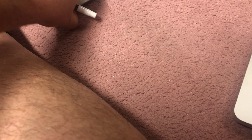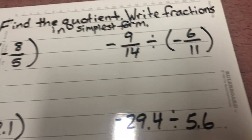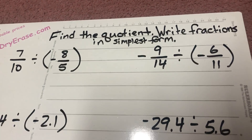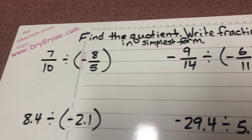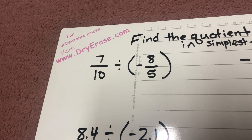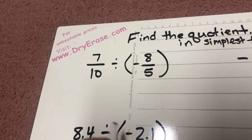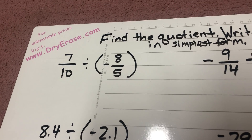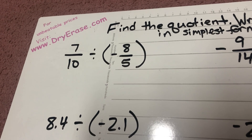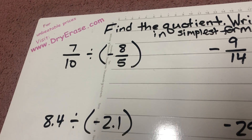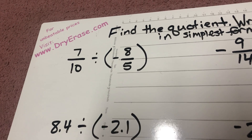Now we get into division. Find the quotient; write fractions in simplest form. The sign rules are the same as multiplication: two positive numbers give a positive quotient, two negative numbers give a positive quotient, and one positive and one negative — or vice versa — will give a negative quotient.